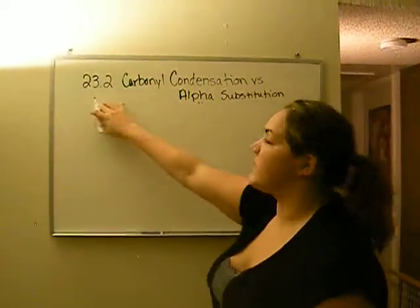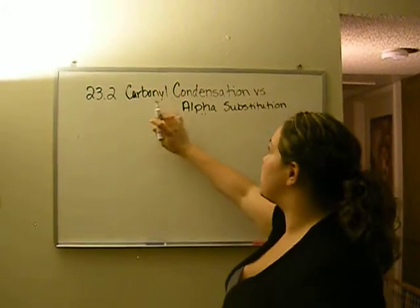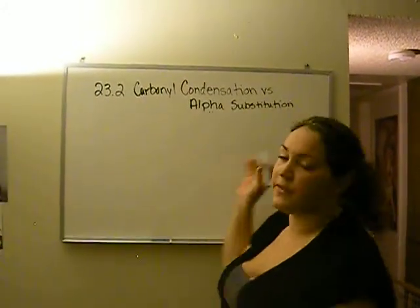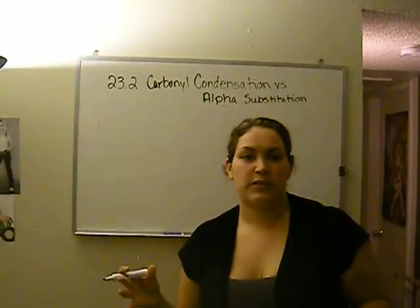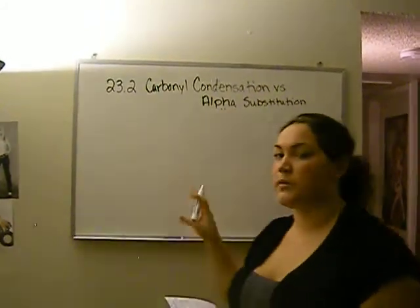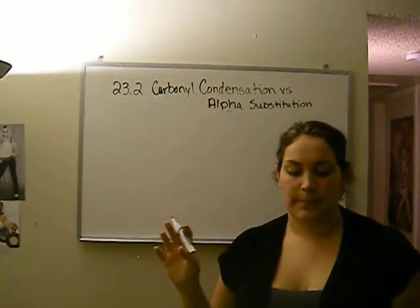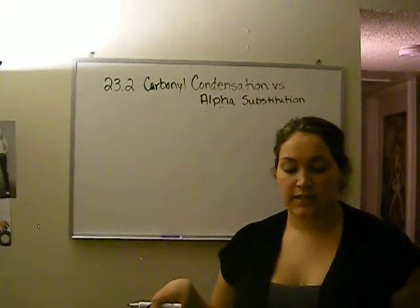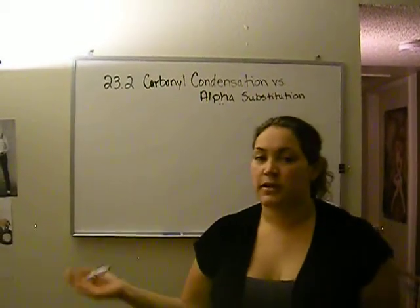Okay. Section 23.2 is the difference between carbonyl condensation versus alpha substitution. It's kind of confusing which way will be chosen because they're both done under basic conditions and involve an enolate ion intermediate. So how do we differentiate?